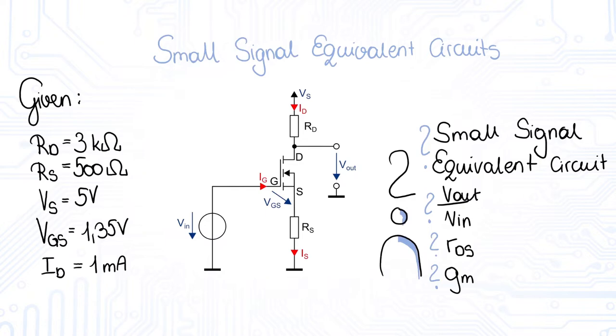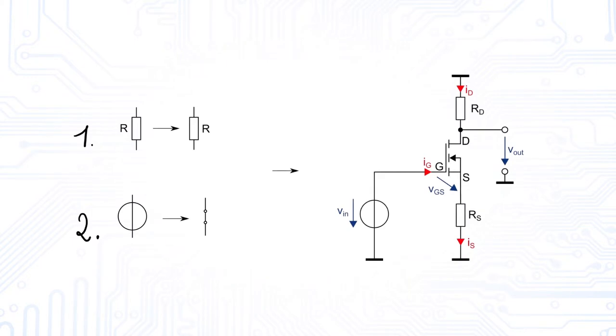Let's start with the small signal equivalent circuit. First of all, we deal with the resistors. As we know, they just remain resistors. As we only have voltage sources and no current sources, we replace all constant DC voltage sources by a short.